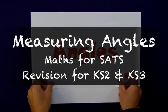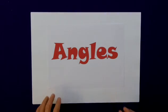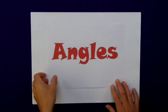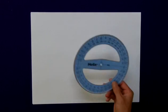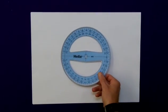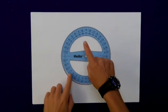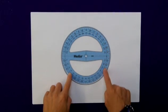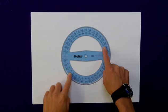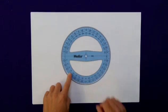I really like the topic of angles. It can be quite a lot of fun in measuring them, but it can cause a lot of problems when children are not familiar with how to use an angle measurer or indeed a protractor, simply because it has two scales on it and children are not always certain which one to use.